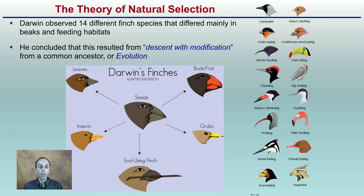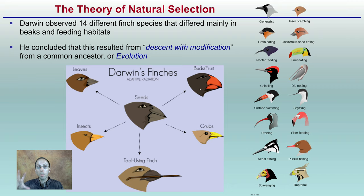In this case, the food item they were eating drove beak shape. The insect-eating bird has a very small and pointed beak able to grab small insects. Those eating buds or large fruit have developed a very strong beak to break the shell of a nut, for example.